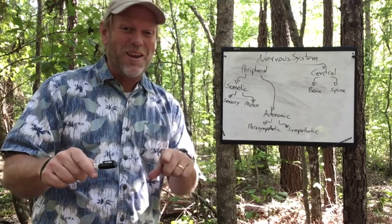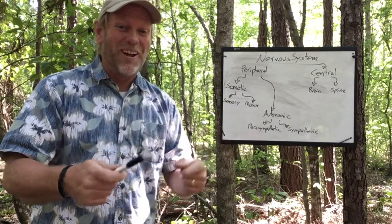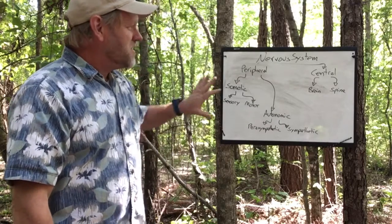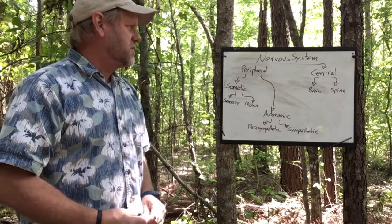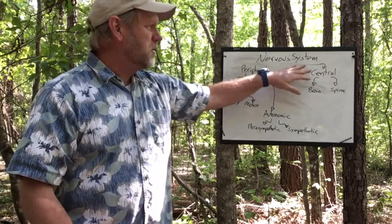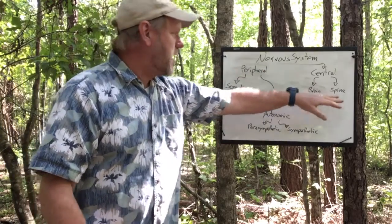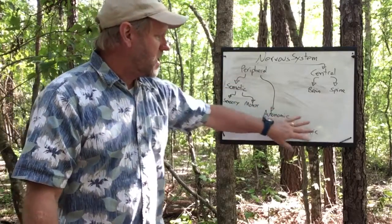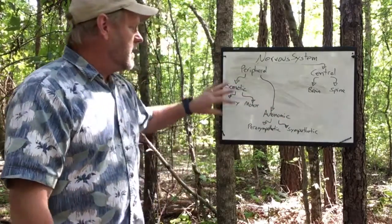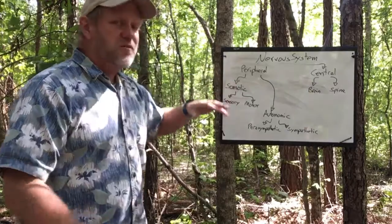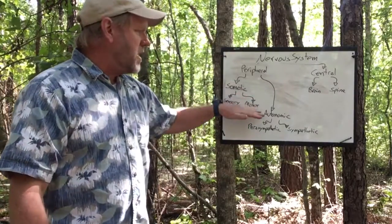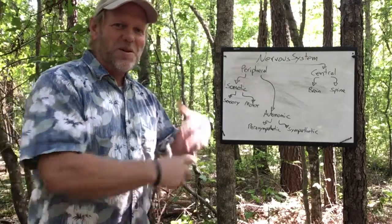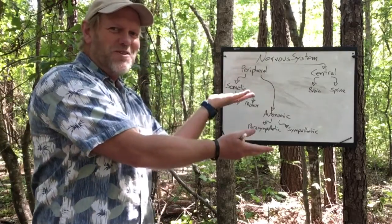So that's the basic structure of the nervous system: peripheral and central. The central is just brain and spine. The peripheral is the autonomic and the somatic — the autonomic handling things we don't have to think about, and the somatic bringing in information from the outside world so our body can send signals back to the muscles and tell us what to do about it.